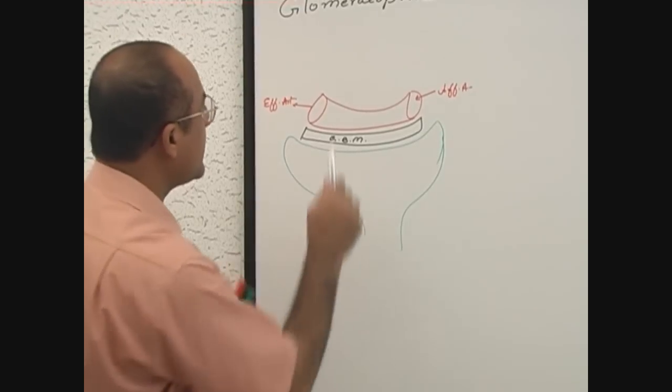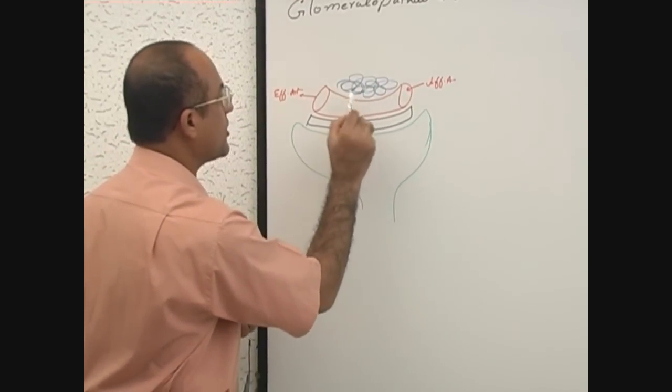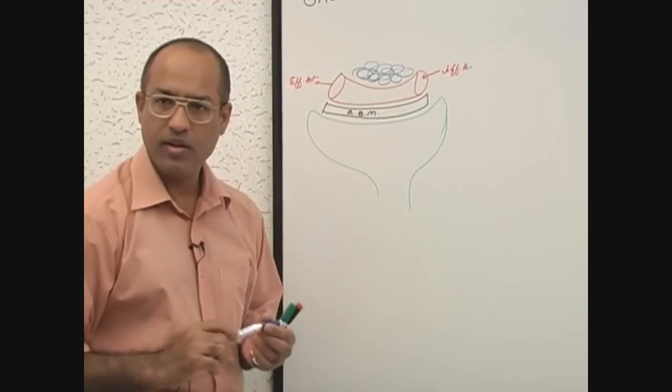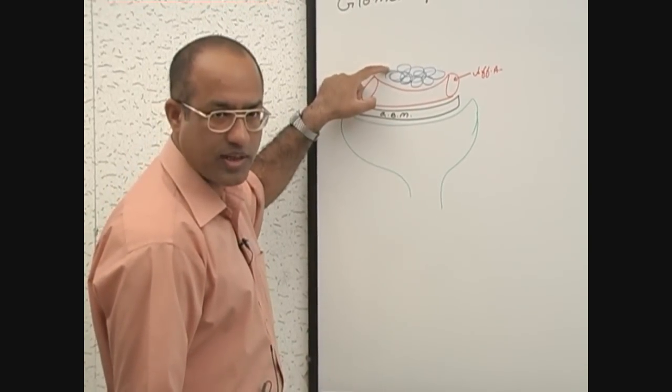And here is connective tissue which is called mesangium.